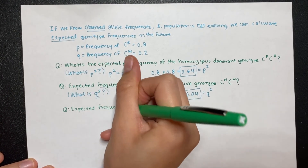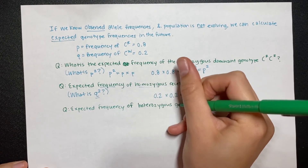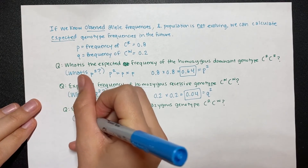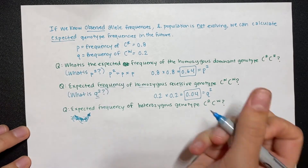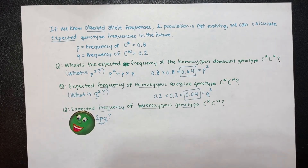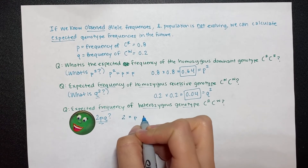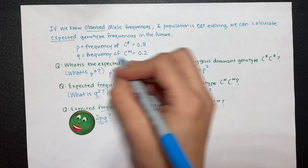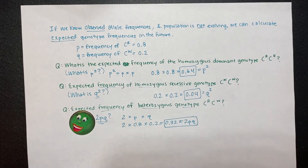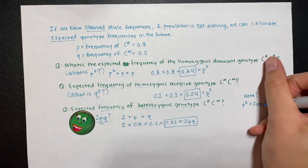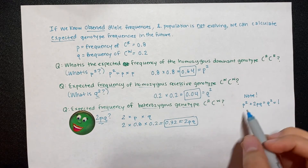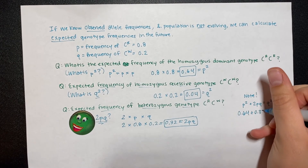What is the expected frequency of the heterozygous genotype CR-CW, or 2pq? To solve for 2pq, multiply 2 times p times q: 2 × 0.8 × 0.2 = 0.32. Remember the second equation — p² + 2pq + q² = 1. We can add all these numbers to double-check: 0.64 + 0.32 + 0.04 = 1. ✓